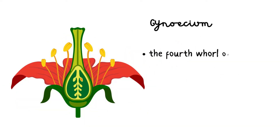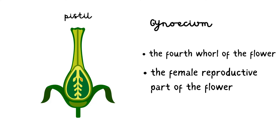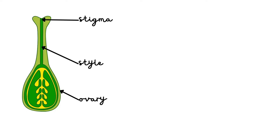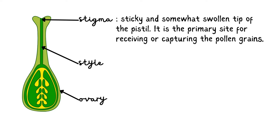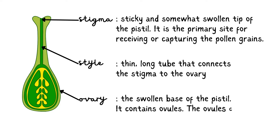Gynoecium. The fourth whorl of the flower, or the gynoecium, is usually present at the center of a flower. It is the female reproductive part of the flower. It is composed of pistils. It may contain a single pistil or a group of pistils. Each pistil has three parts: stigma, style, and ovary. Stigma is the sticky and somewhat swollen tip of the pistil. It is the primary site for receiving or capturing the pollen grains. Style is a thin, long tube that connects the stigma to the ovary. Ovary is the swollen base of the pistil. It contains ovules. The ovules contain eggs or the female gametes.